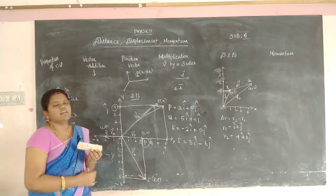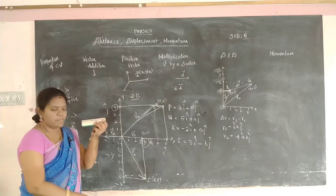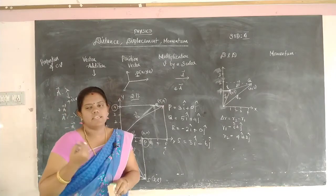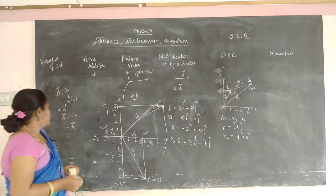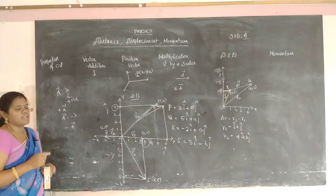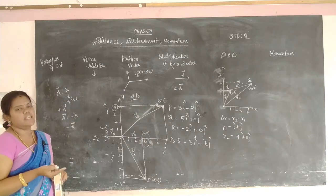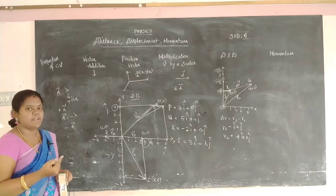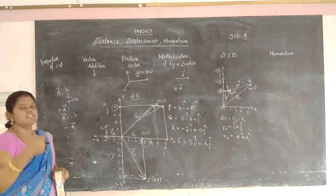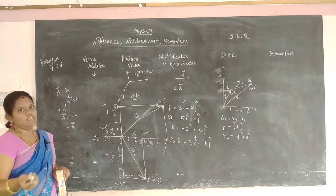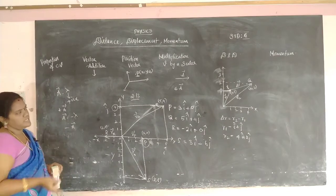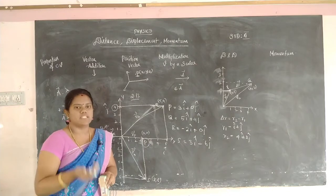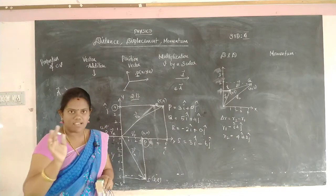Multiplication of a vector by a scalar will definitely give a vector, but the direction depends only on the scalar value — whether positive or negative. If scalar is positive the vector is also positive; if scalar is negative the vector is also negative.